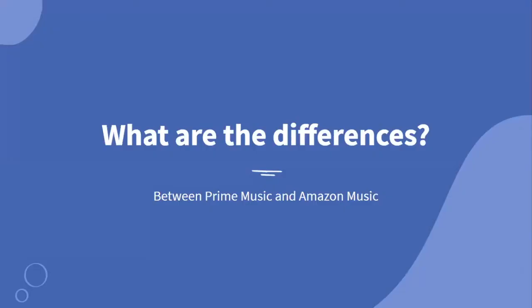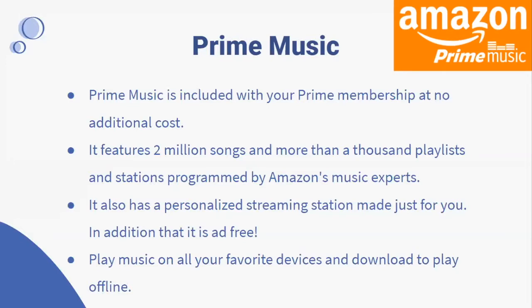Now let's talk about the differences between Prime Music and Amazon Music. Prime Music is included with your Prime membership at no additional cost. It features two million songs and more than a thousand playlists and stations programmed by Amazon's music experts. It also has a personalized streaming station made just for you, and it's all ad-free.